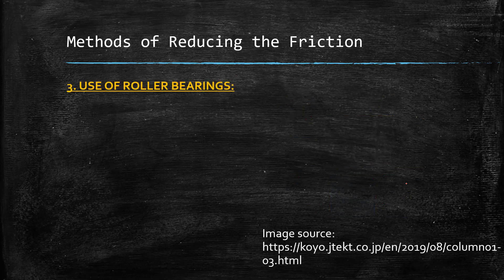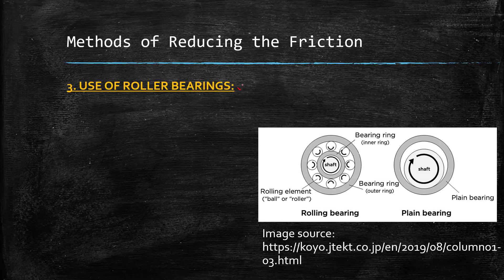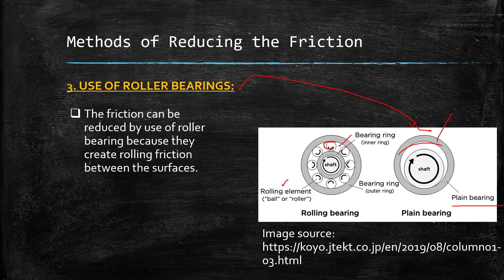The third and last method is use of roller bearings. A plain bearing is connected to the shaft and rotates. Friction can be reduced by use of roller bearings because they create rolling friction between the surfaces. In rolling friction, we do not have as much surface contact compared to sliding friction, so the friction is reduced significantly.